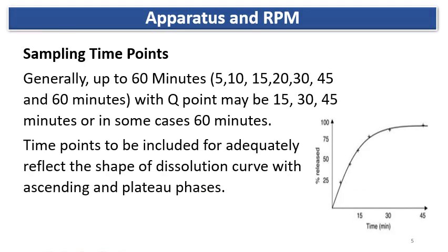Regarding sampling points: for IR formulations, sampling is done up to 60 minutes during product development. The Q point is generally set at 15, 30, 45, or sometimes 60 minutes based on product characteristics. During development, sampling is done at 5, 10, 15, 20, 30, 45, and 60 minutes to understand the dissolution profile and the shape of the dissolution curve.